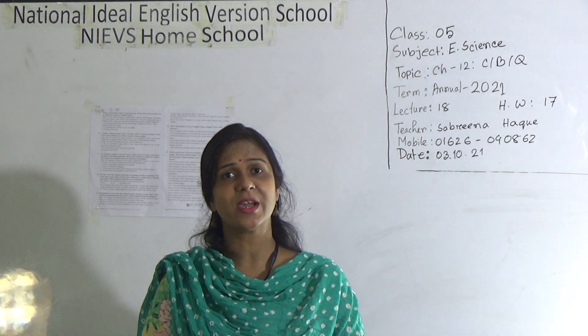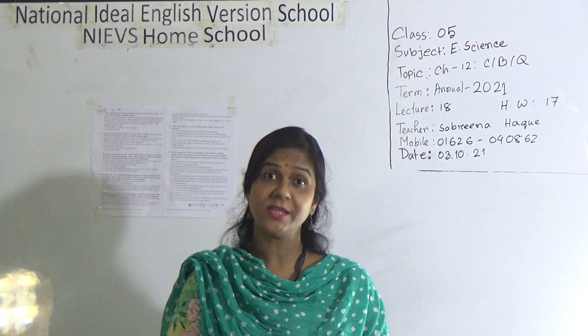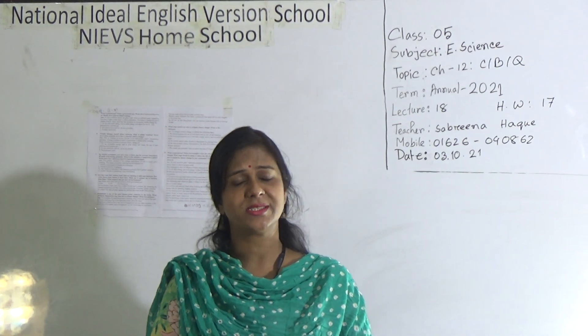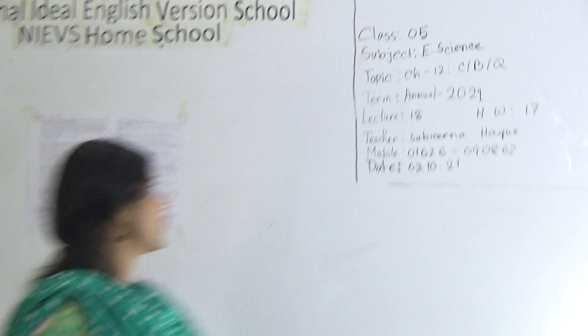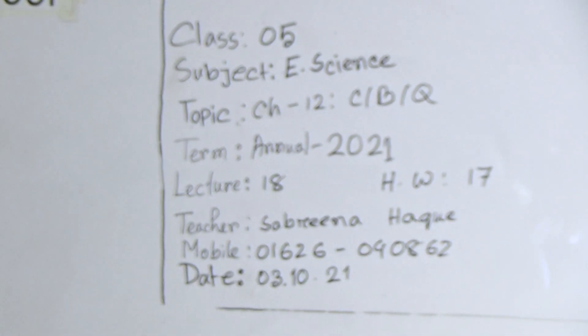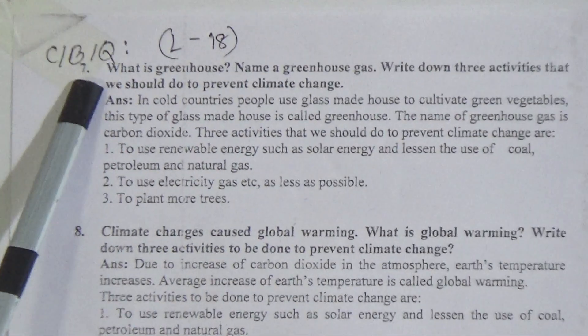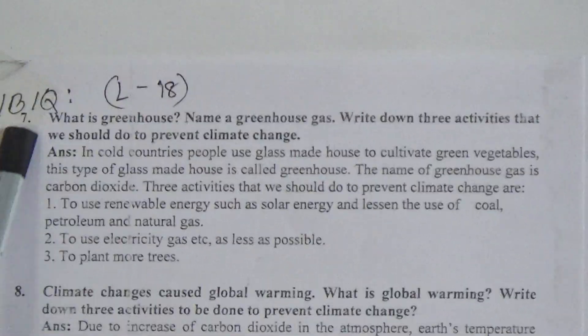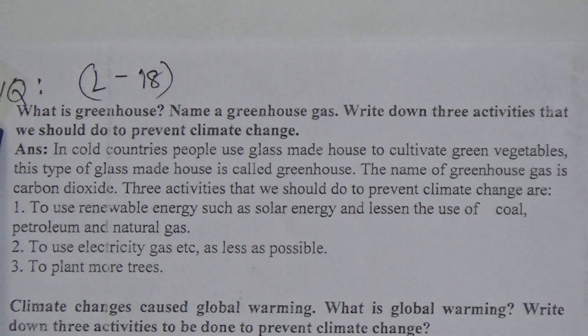Dear students, today I am going to take a science class for Class 5 students based on competency-based question answer which belongs to Chapter 12. In our previous class we already discussed competency-based question answer from Chapter 12 — the name of the chapter is Climate Change. Today we will start from question 7.